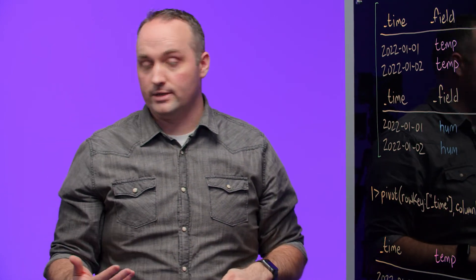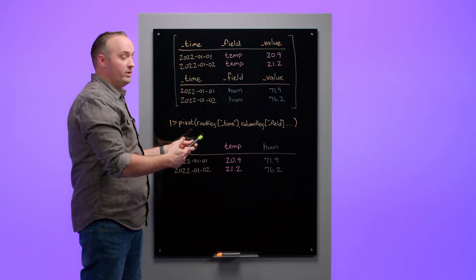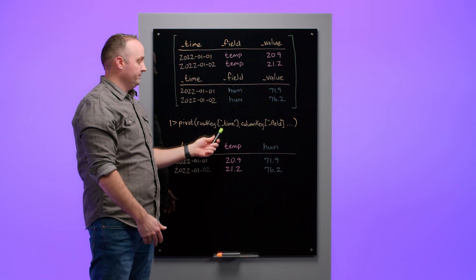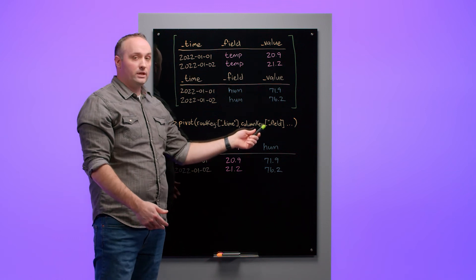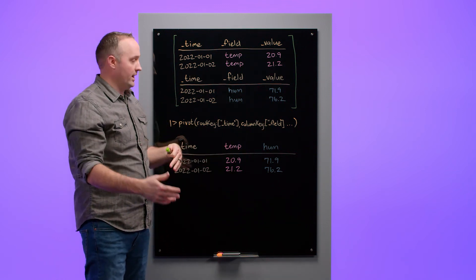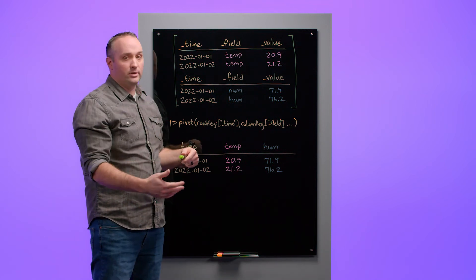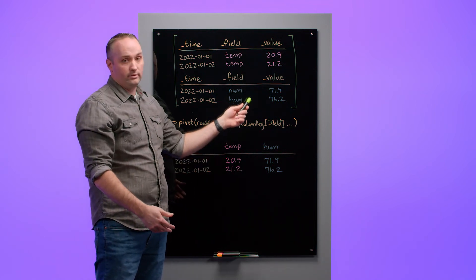Using the same pivot operation that we discussed in the previous example, I'm going to pivot these input tables on the time column. For every unique field key, I'm going to add a new column to my output rows, and I'm going to populate that column using the value from the value column.